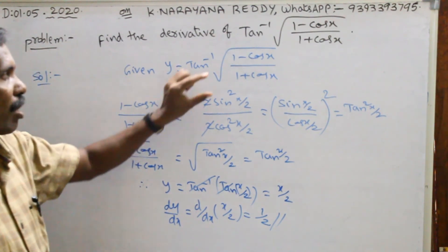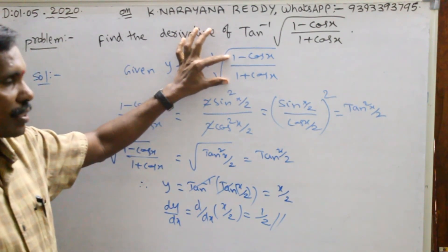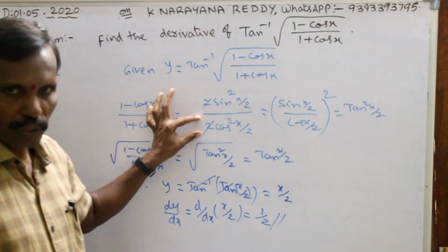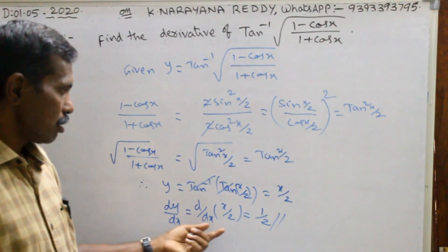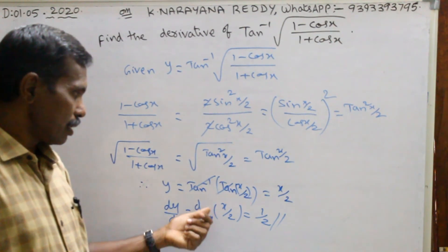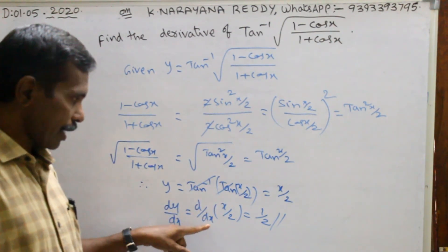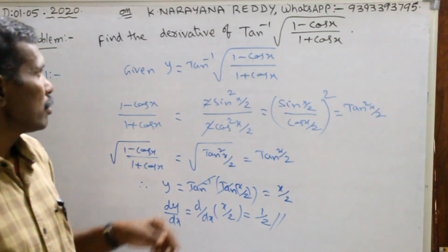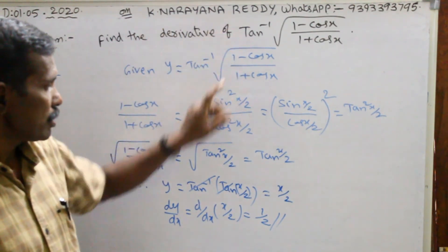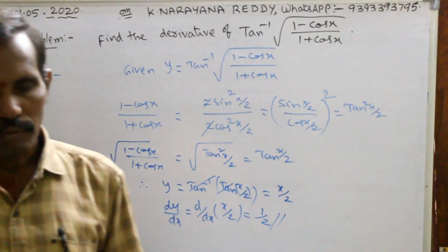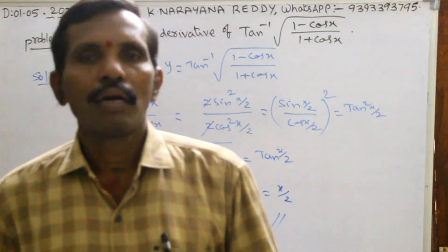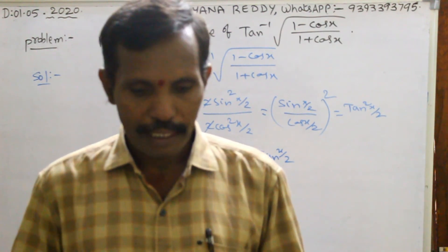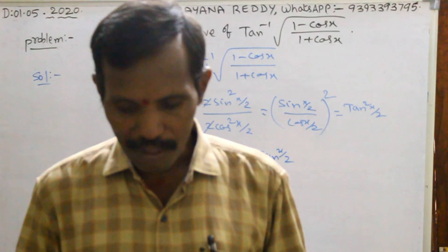So here, we are using the formulas: 1 minus cos x equals 2 sin square x by 2, and 1 plus cos x equals 2 cos square x by 2. We simplify and differentiate x by 2 with respect to x to get 1 by 2. The derivative of this function is 1 by 2. Just use the formulas — please note and remember them carefully. Thanks for watching.